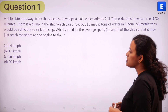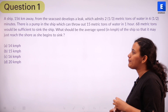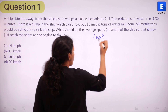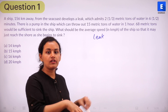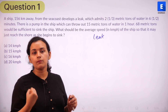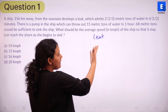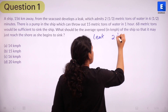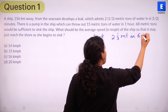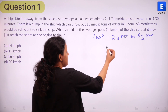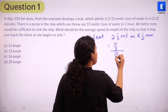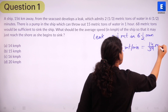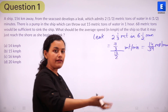The ship is 156 kilometers away from the sea coast and has developed a leak admitting 2⅓ metric tons of water in six and a half minutes. The leak is taking water into the ship — because of the leak, water is entering the ship, which will cause it to sink. The rate of water entering due to the leak is 2⅓ metric tons in 6.5 minutes, which equals 7/3 divided by 13/2, giving us 14/39 metric tons per minute.